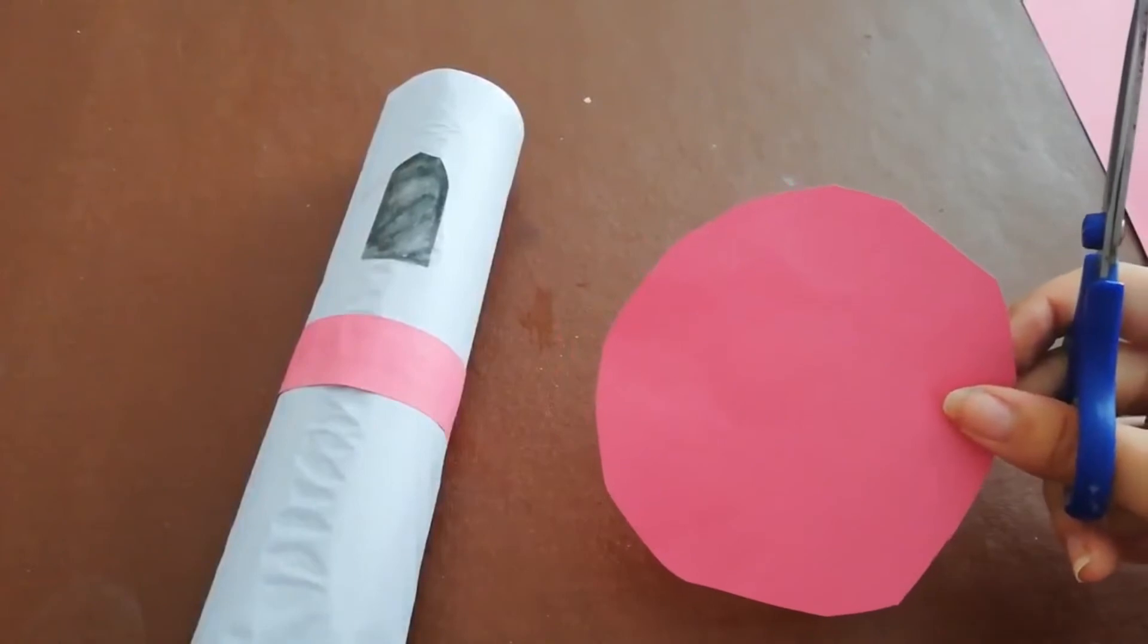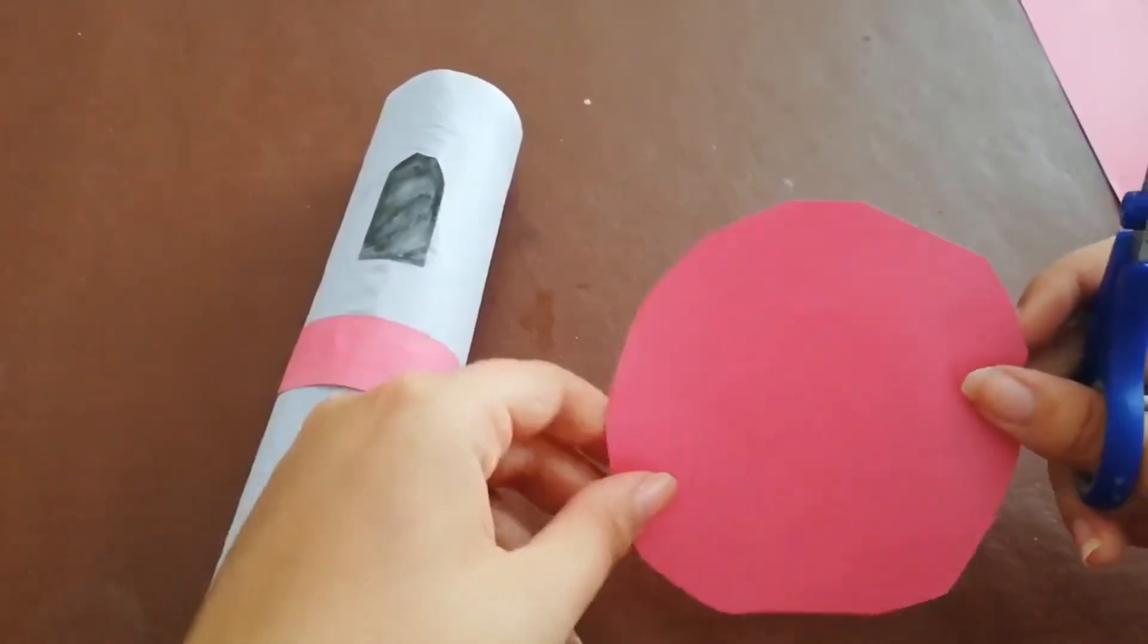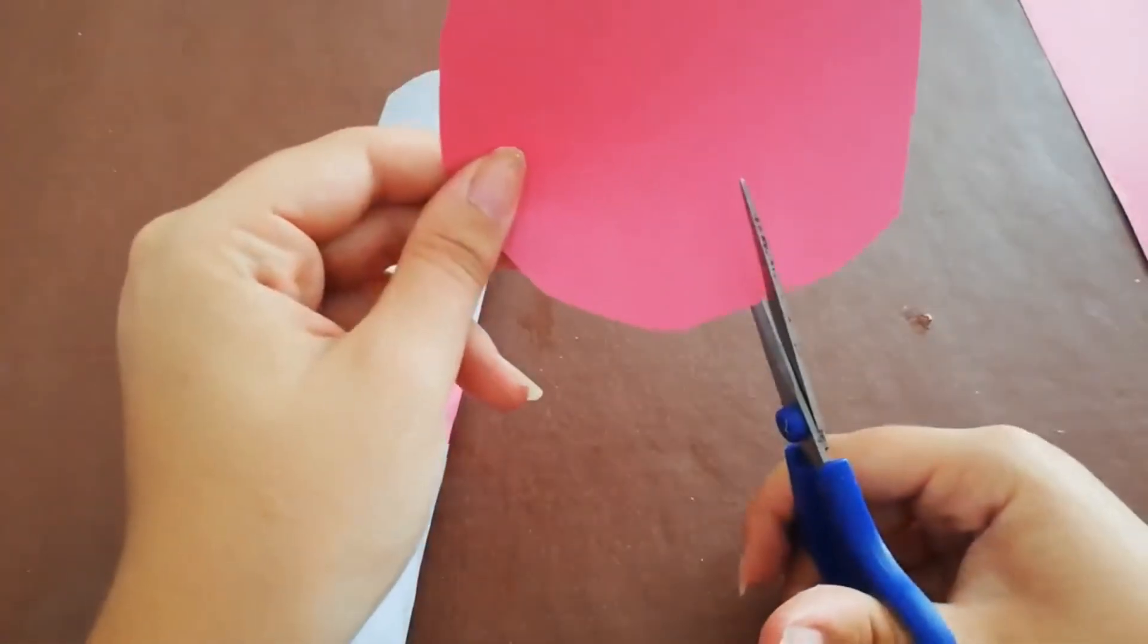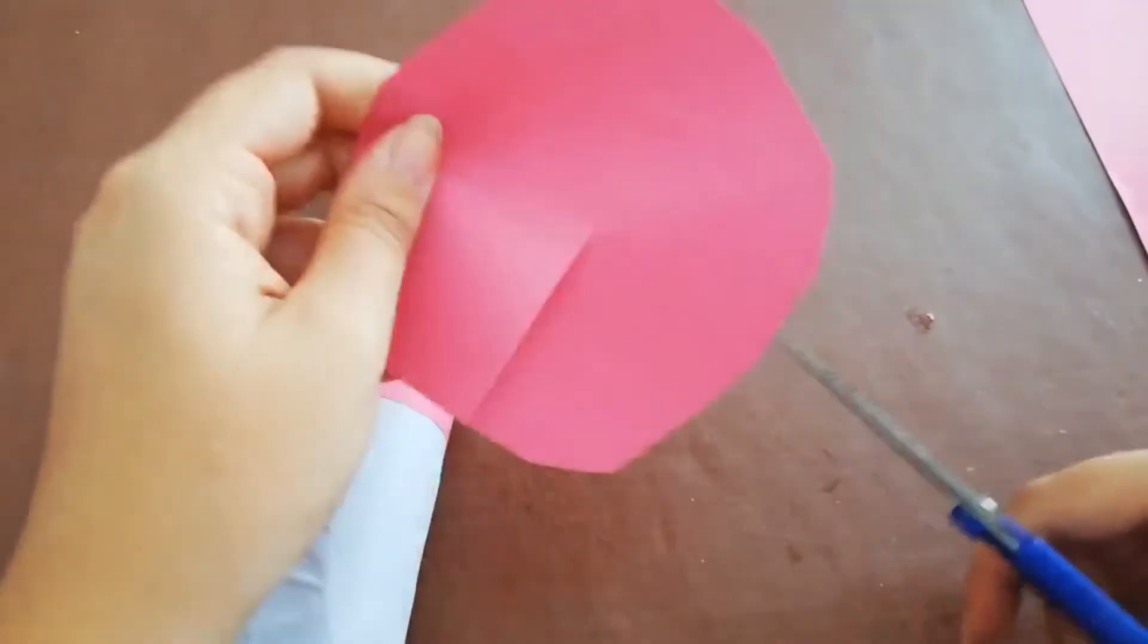And to make our top, we need to make this circle into a cone. To do that, I'm going to cut about a quarter out, like that.